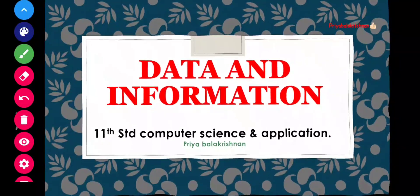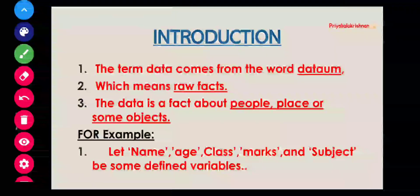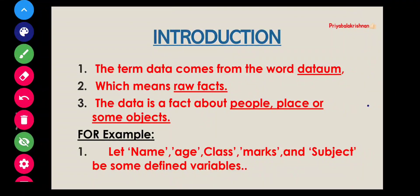Let's start with the introduction to data. The term data comes from the word 'datum', which means raw fact. The data is a fact about people, place, or some object — that is the raw fact.